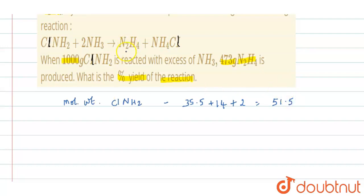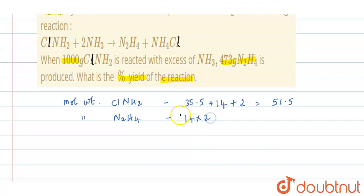Similarly, let us calculate the molecular weight of N2H4. Nitrogen is 14, so 14 into 2 gives 28, plus hydrogen: 1 into 4 gives 4. So the molecular weight of N2H4 becomes 32.